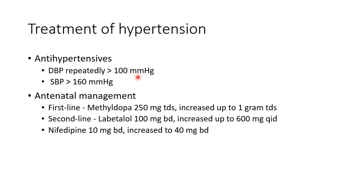Antihypertensives are indicated when the diastolic blood pressure is repeatedly greater than 100 mmHg or systolic blood pressure is repeatedly greater than 160 mmHg. The first-line drug is methyldopa, given at 250 mg three times daily, up to 1 gram three times daily. The second-line drug is labetalol, given at 100 mg twice daily, up to 600 mg four times daily. Nifedipine can also be used at 10 mg twice daily, up to 40 mg twice daily.